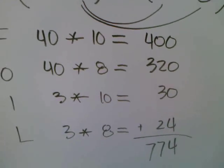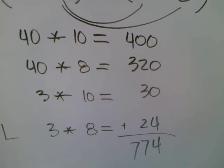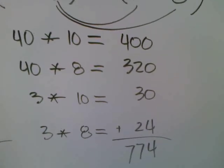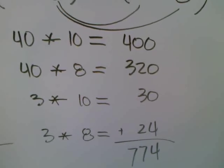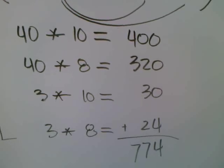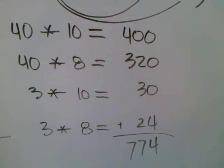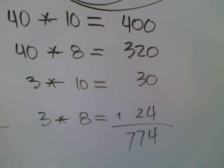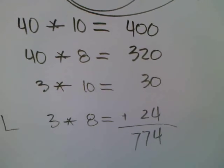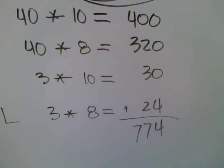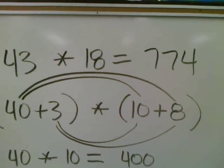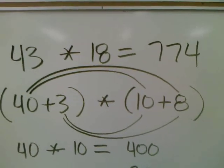Now there are four easier-to-complete multiplication problems, and these are just extended multiplication facts. 40 times 10 is the same as multiplying 4 times 1 and adding two zeros, so that's 400. 40 times 8 is the same as 4 times 8 and adding one zero, for 320. 3 times 10 is 30, and 3 times 8 is 24. Those four sums are added together to create 774 as the final answer. So 43 times 18 is 774.